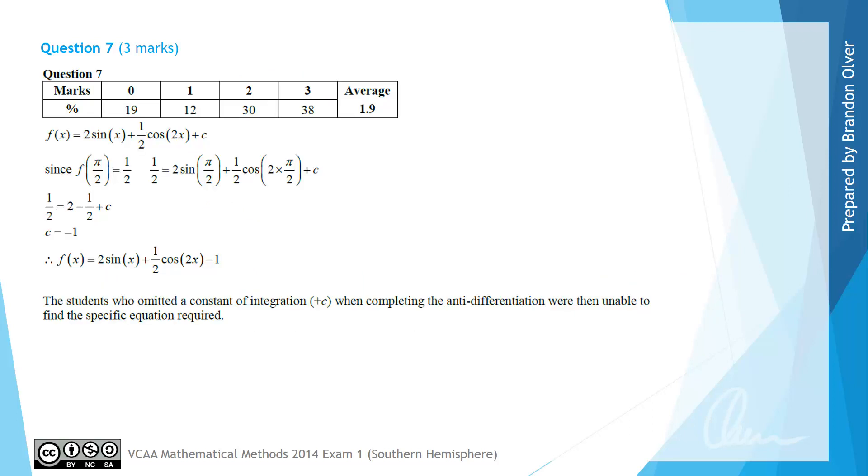From the examiner's report we can see that 38% of students got full marks for this question. The examiner goes on to say that students who forgot the constant of integration when completing the anti-differentiation were then unable to find the specific equation required. So that was a stumbling block for many students.